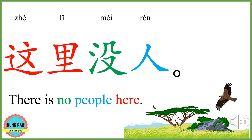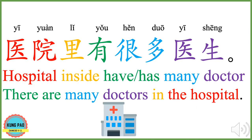这里没人。 这里 means here. 没 here means no. 人 means person or people. 这里没人 means there is no one here.